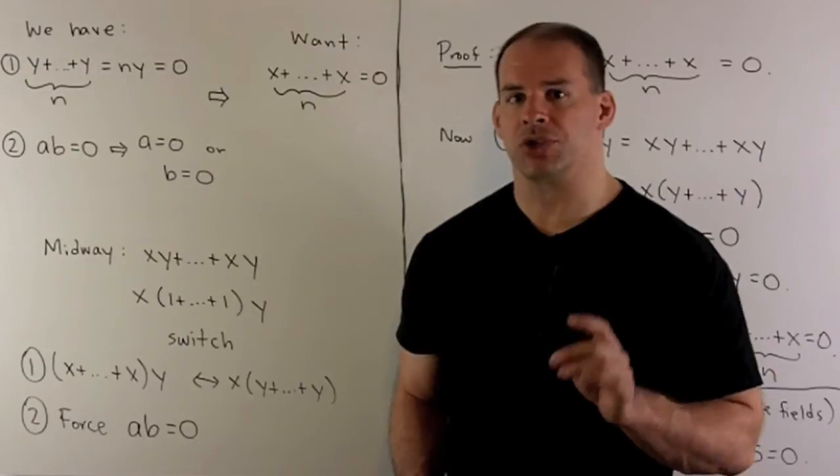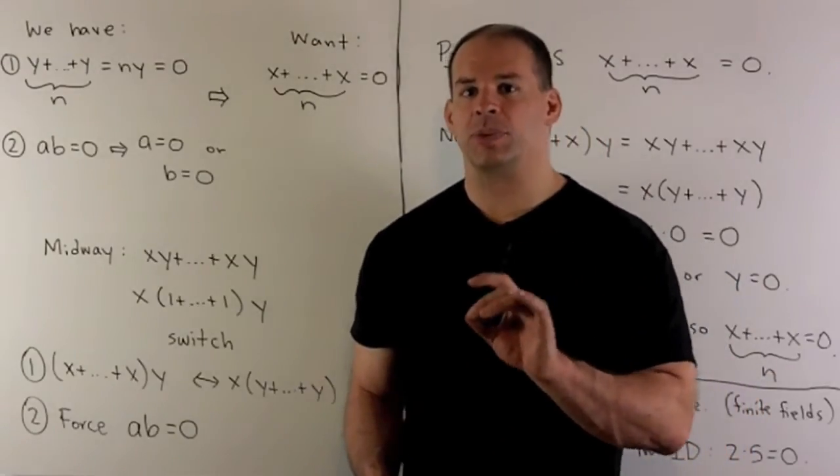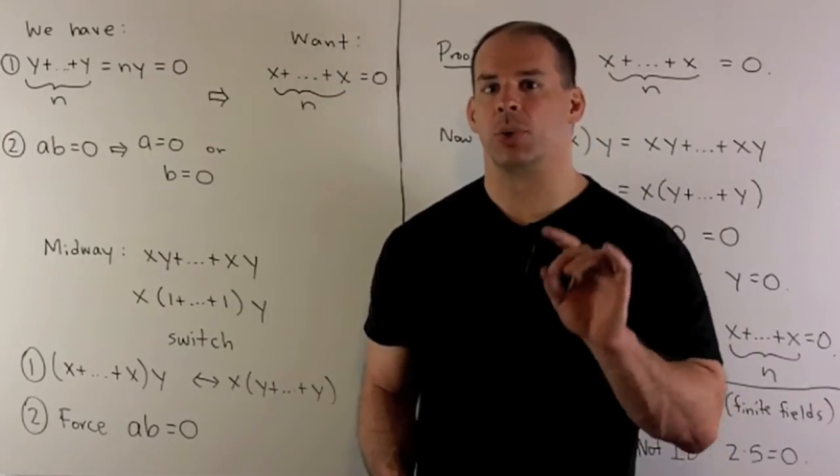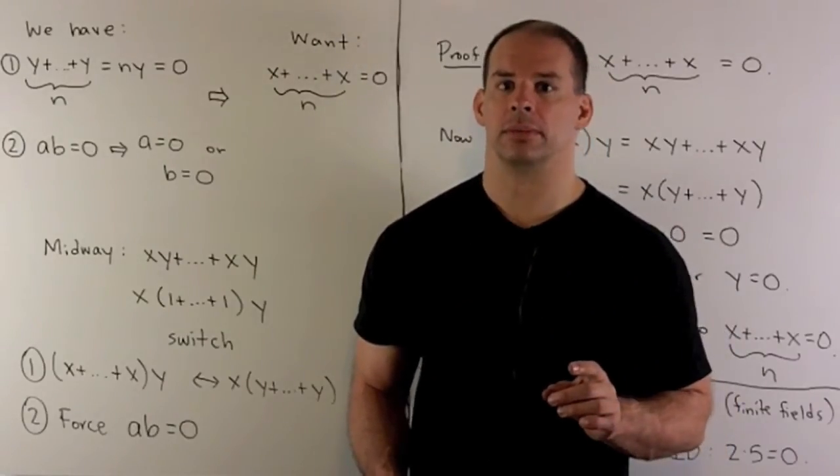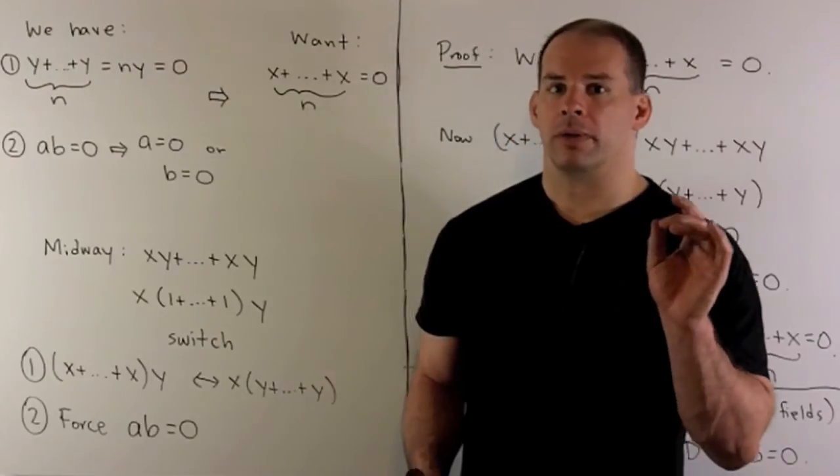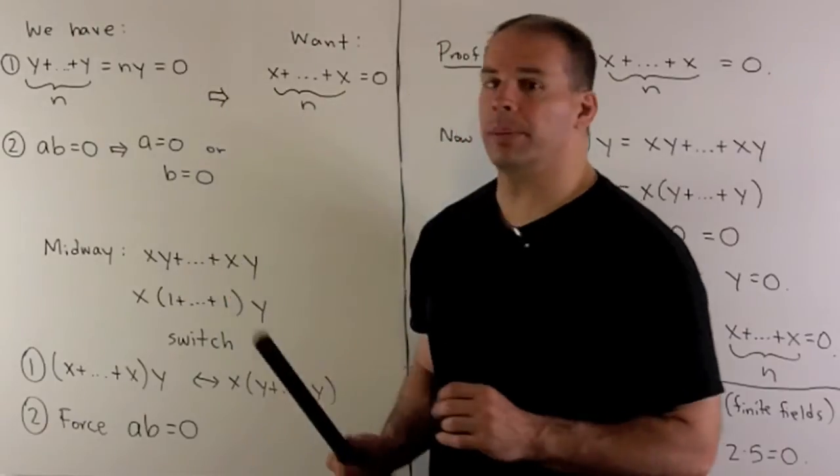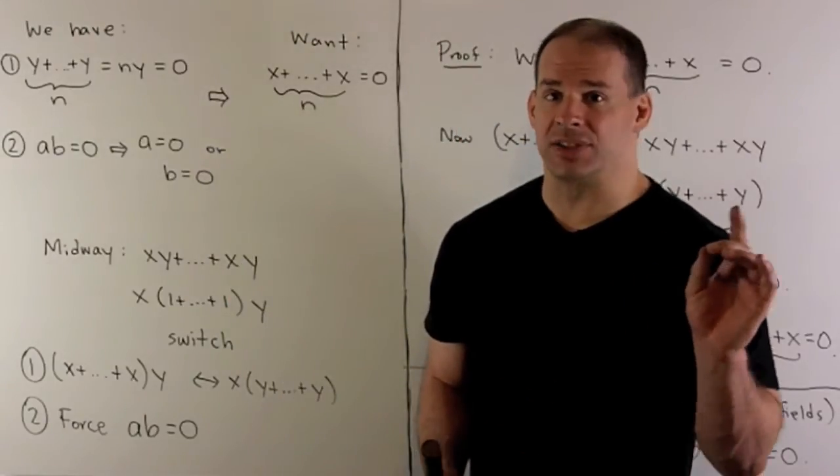Now, let's prove our result. The idea here is not to just bang out a proof. We want to see how we get from our assumptions to our conclusion. So first assumption, if I take y, add it to itself n times, we get zero. We're certainly going to need that somewhere.